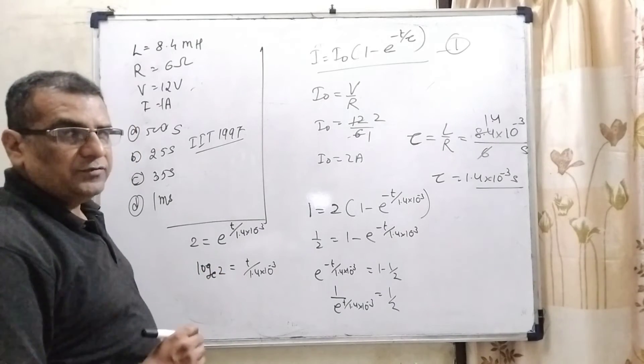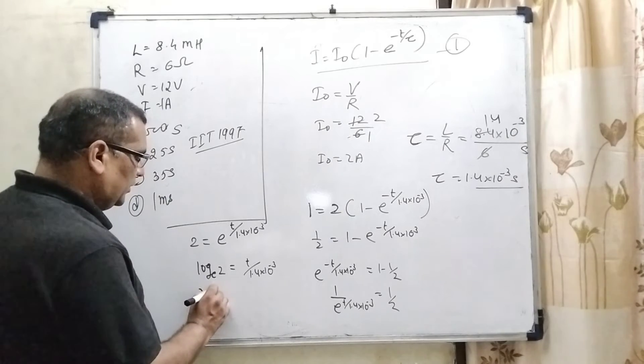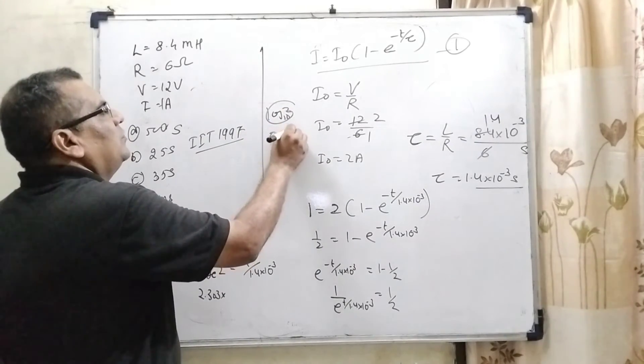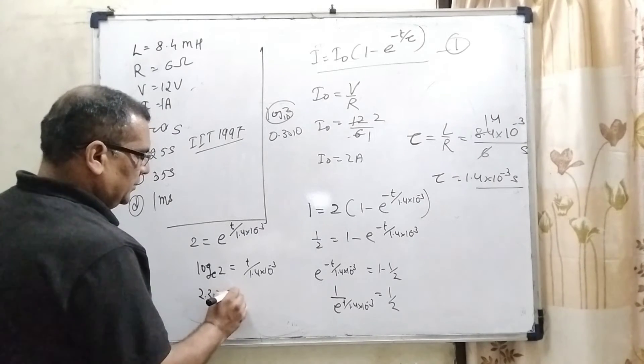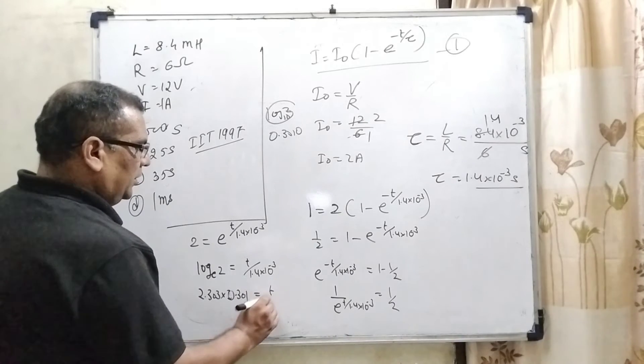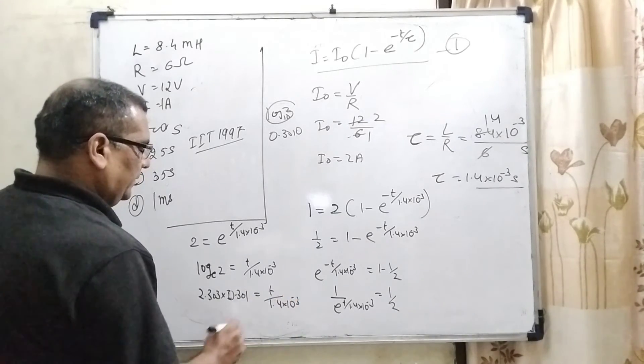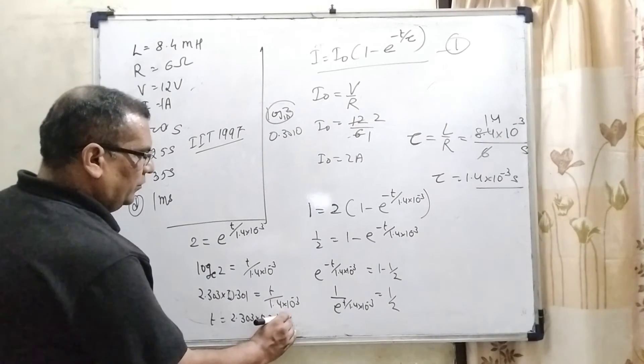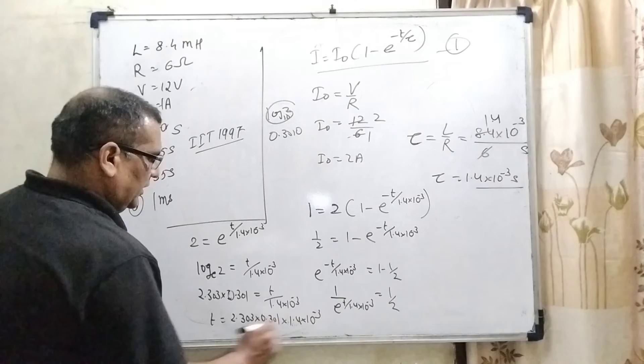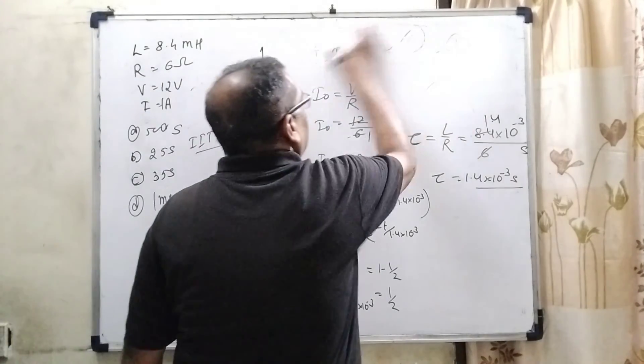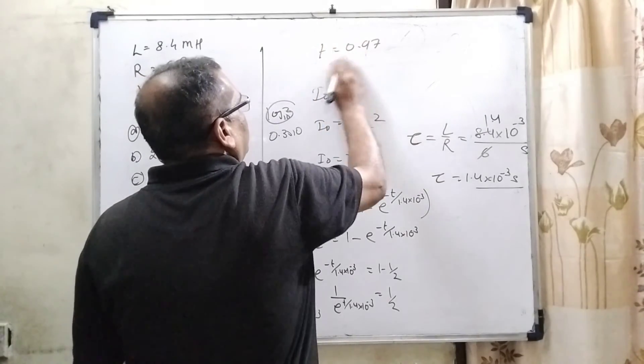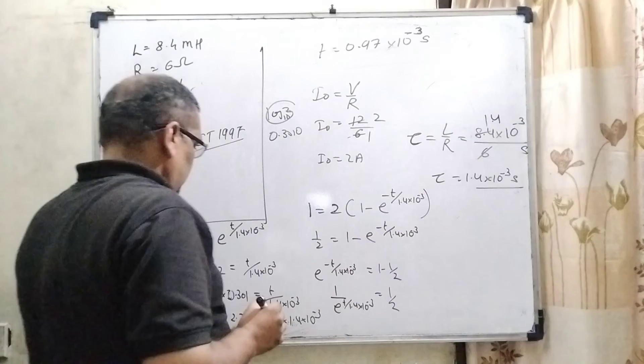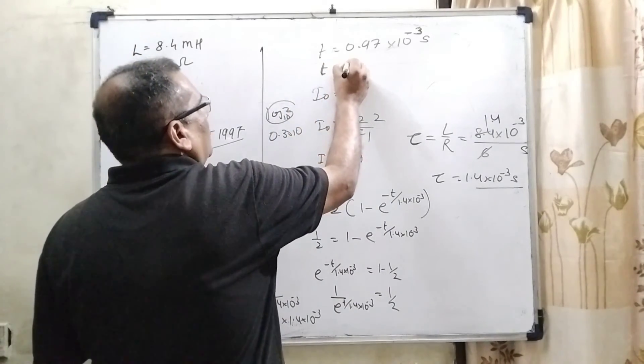Remember, here natural log. So, let us first convert into base 10 log by multiplying 2.303 and then log 10 of 2. Here log 2 to the base 10, its value is 0.3010. So, t equals 2.303 into 0.301 into 1.4 into 10 raised to power minus 3. Then its value is approximately 0.97 into 10 raised to power minus 3 second. So, approximately its value is 1 millisecond.